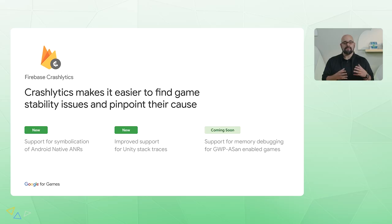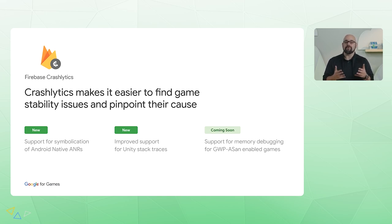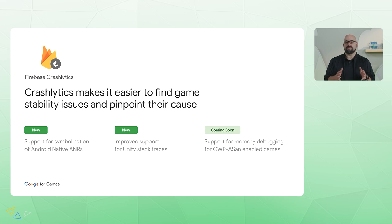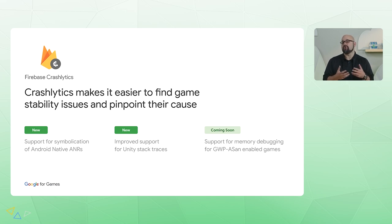We've also introduced a range of new tools and services to help you improve the quality of your game. Today, we're announcing support of symbolication for Android ANRs when using the NDK. After all, ANRs account for a significant number of unintended application exits on Android. Additionally, we've improved support for Unity stack traces, including Unity on-demand fatal events. And lastly, Crashlytics now supports memory debugging for GWP-ASAN-enabled games.